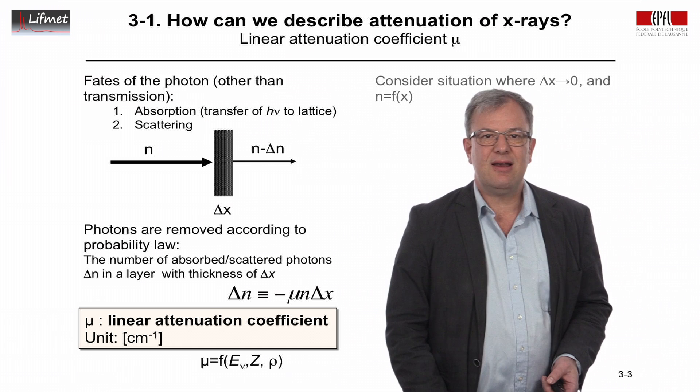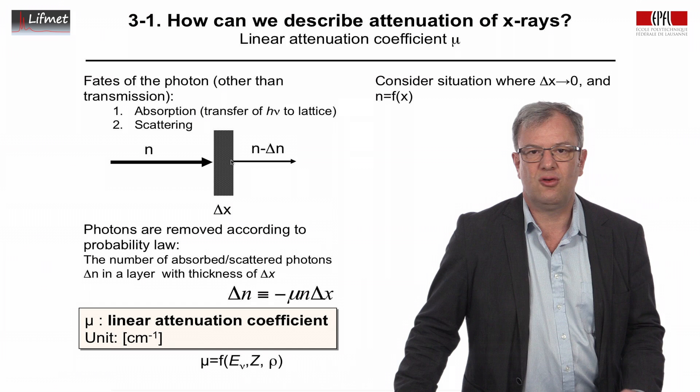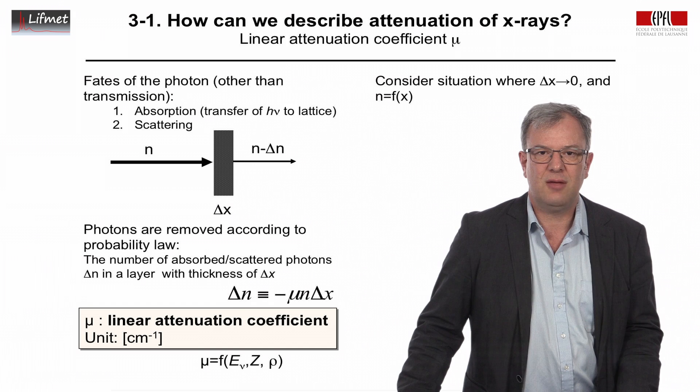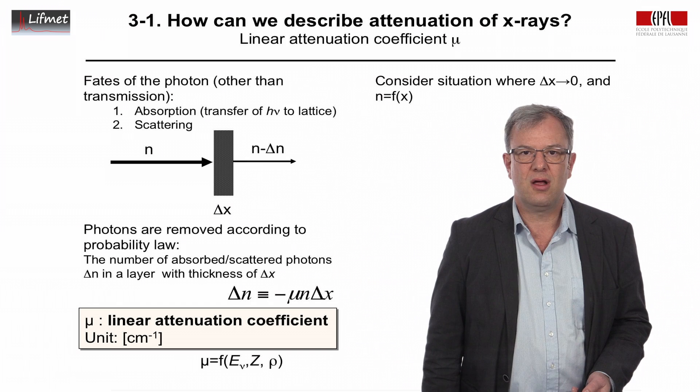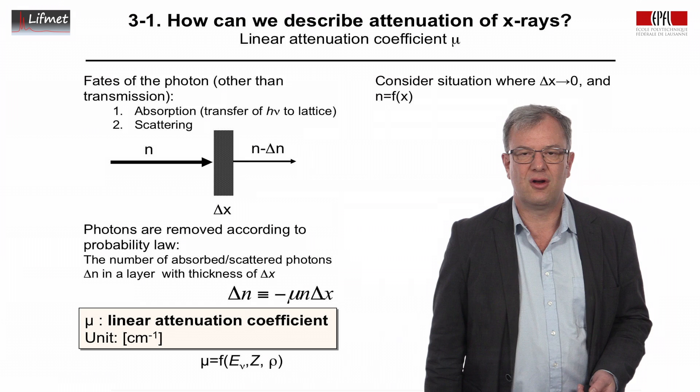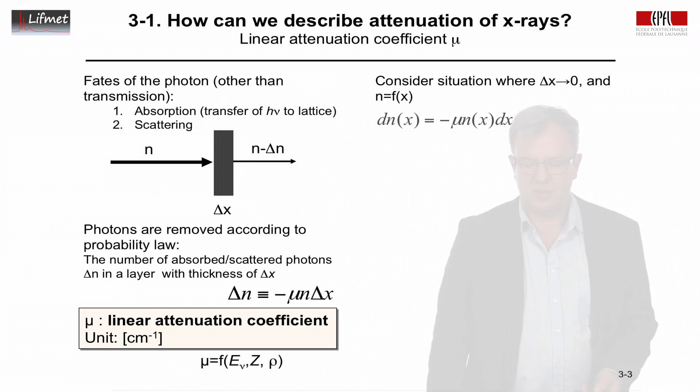So now we will pretend that we take this situation here and we'll pretend that this delta x, we can assume it's a centimeter, then we'll let it go to very small values. Let's say a millimeter, then a micrometer, then a nanometer, it will make it very thin. So we'll mathematically, we'll tend to, we'll let delta x go to zero and we'll have the number of photons that are being observed as a function of distance x as they pass through the tissue.